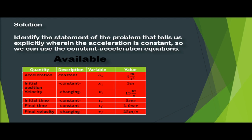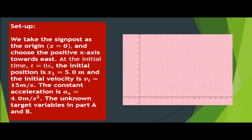We also have the value for final velocity v_f = 25 meters per second. Our setup: we take the signpost as the origin, and the positive x-axis points east. At initial time t = 0, the initial position is x₁ = 5 meters, the initial velocity is v_i = 15 meters per second, and the constant acceleration is a_x = 4 meters per second squared.